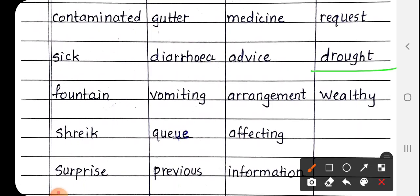Next is drought, D-R-O-U-G-H-T. Matlab sukha. Jab bhi barish nahi hoti hai aur akal hota hai to usse kehte hai sukha means drought. Next is wealthy, W-E-A-L-T-H-Y. Wealthy. Wealthy matlab dhanvan.